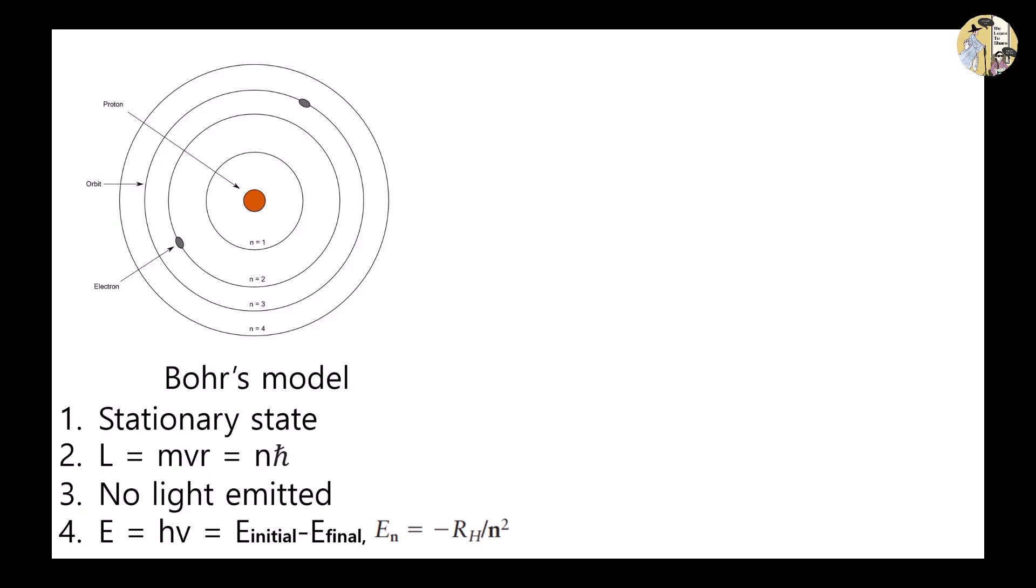By writing the energy equation of the orbiting electron using terms related to kinetic energy and the Coulomb potential, Bohr obtained the following equation where En is the energy of the electron, R is the Rydberg constant, and n is the principal quantum number.